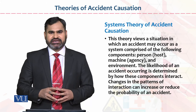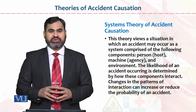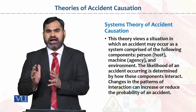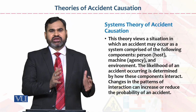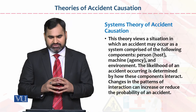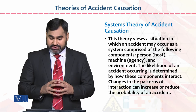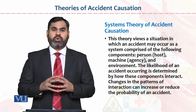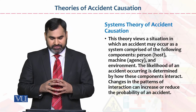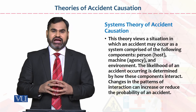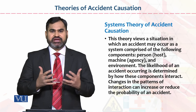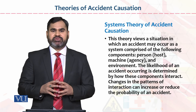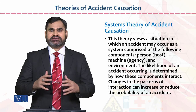In the system theory of accident causation, the meaning is that when any accident occurs in an organization, the role of the individual is less and the role of the system is more. This theory views a situation in which an accident may occur as a system comprised of the following components: person/host, machine/agency, and environment. If a specific favorable combination exists among these three factors, the chances of accident decrease; if there is no optimal combination, the chances of accident increase.